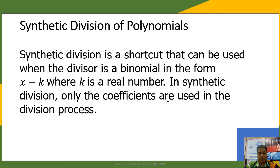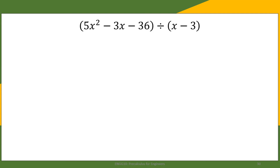So how do we do synthetic division? We shall illustrate this in the next example. We shall divide 5x squared minus 3x minus 36 by x minus 3 using synthetic division. First, make sure that your dividend is written in standard form, meaning the terms should be written in decreasing degree. For this example, 5x squared minus 3x minus 36 is already in standard form.